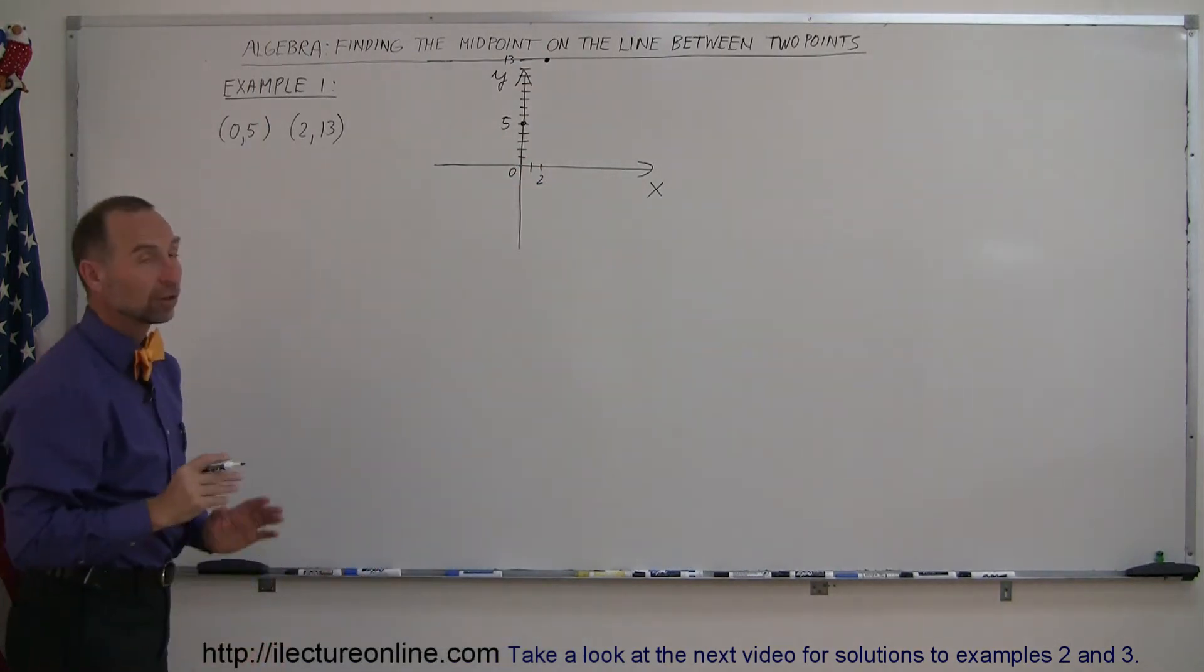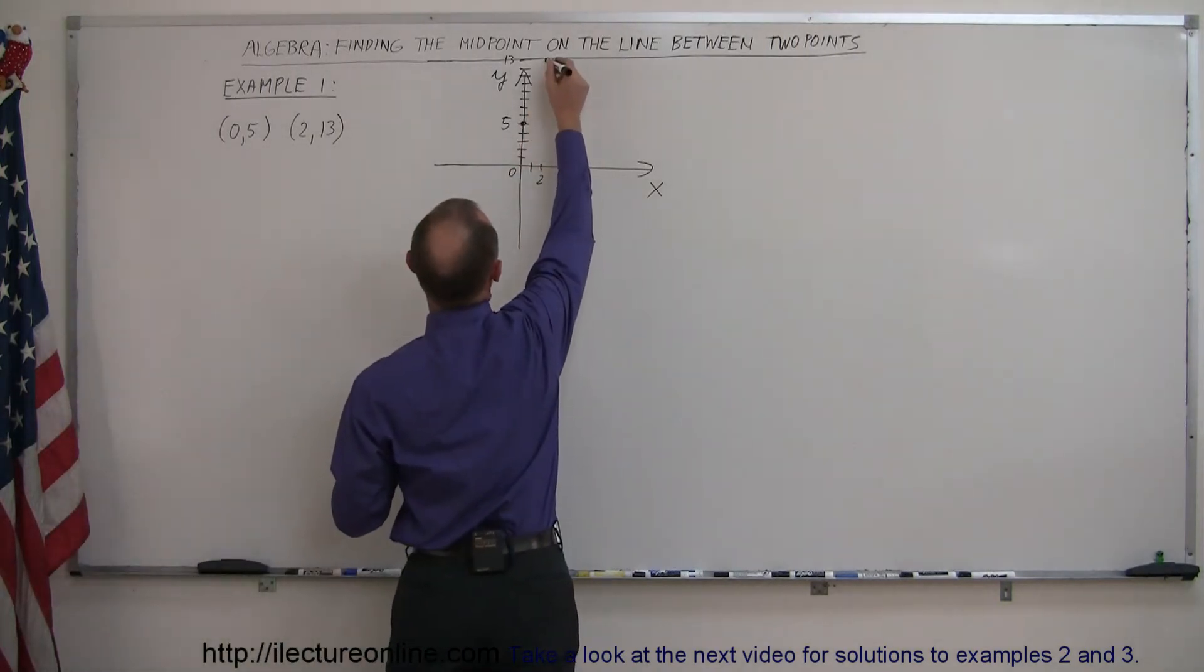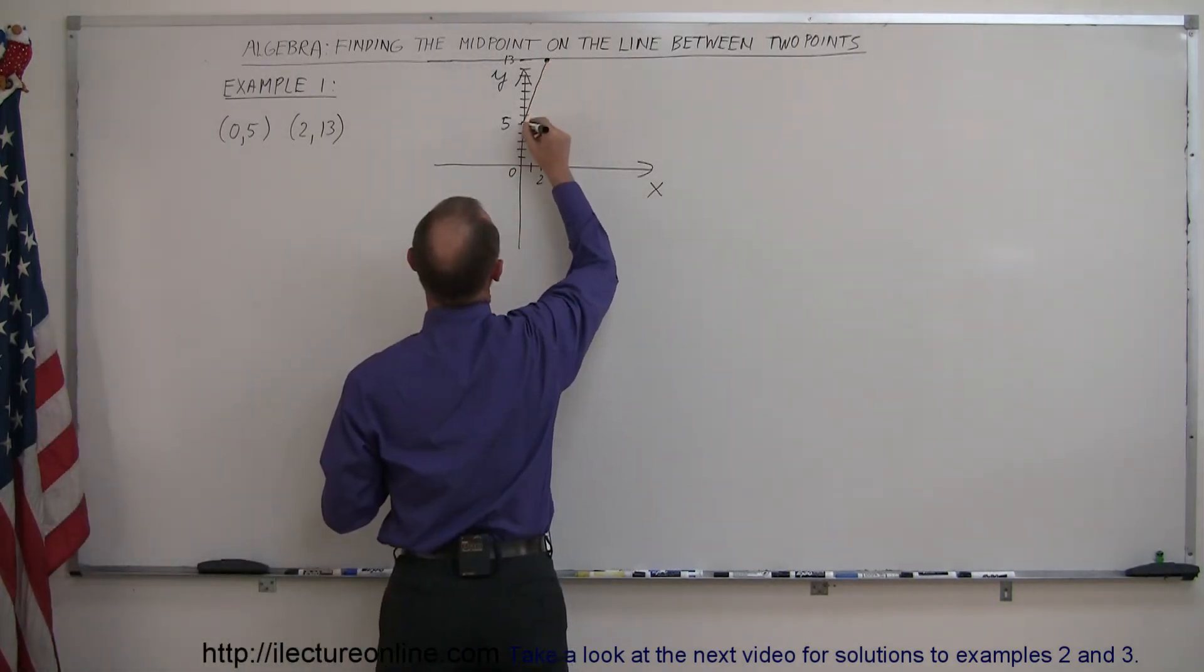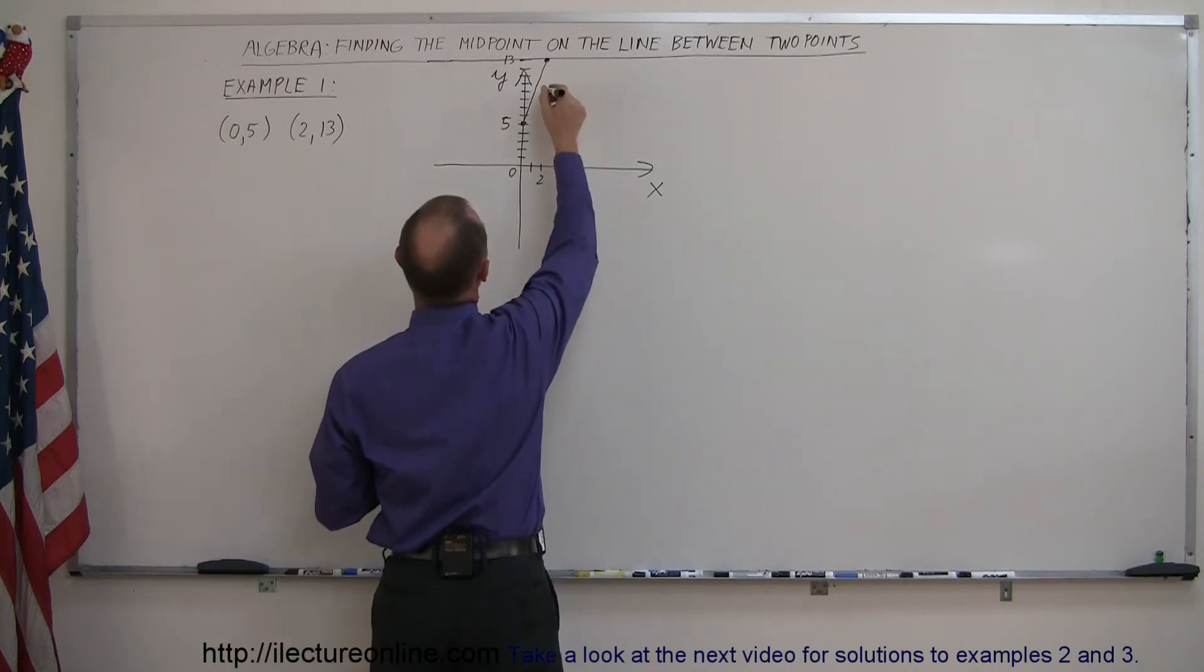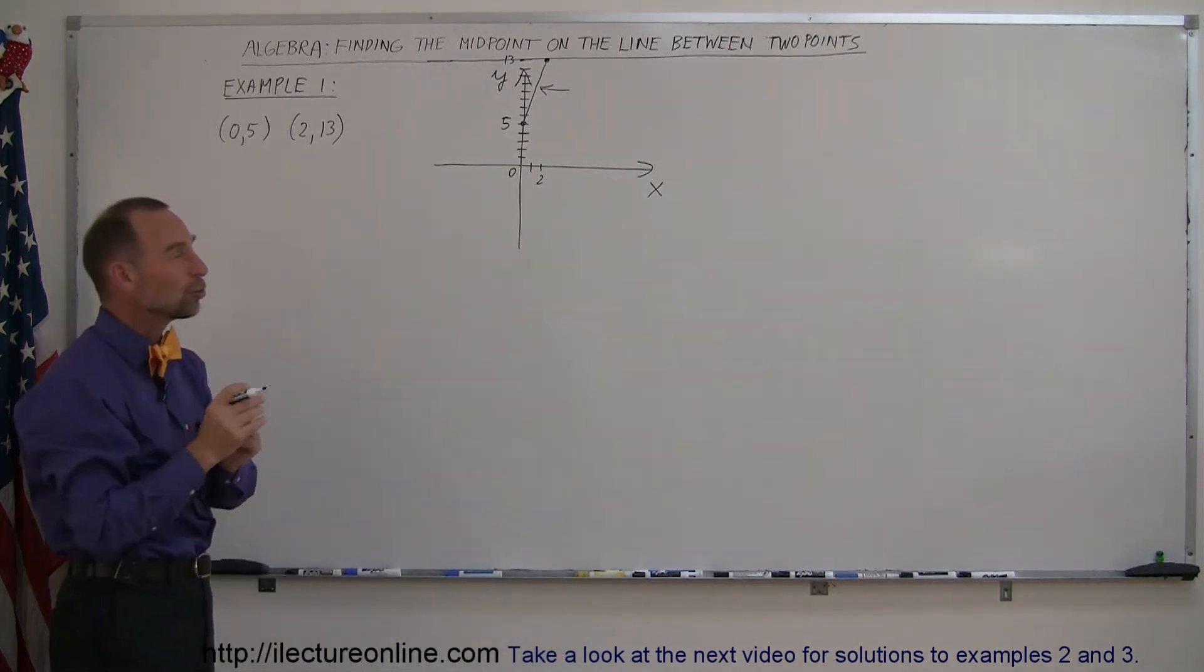Alright, so there are the two points, it helps to draw a line between them, so here's the line between the two points, and now we're supposed to find the halfway point. So we can visually see that it's about here, not exactly where, we don't know that, we're trying to find out, and the question then is how do you do that?